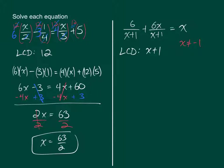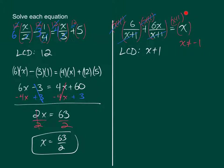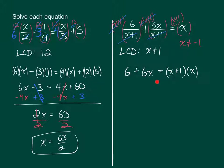So let's go through and do this multiplication by the LCD. We have this times X plus 1, this times X plus 1, and X times X plus 1. We're multiplying by the LCD to get rid of the denominator, so this will cancel with this denominator, this will cancel with this denominator, and in this last term on the other side there's nothing to cancel. So the new equation will look like: 6 plus 6X equals X plus 1 times X.